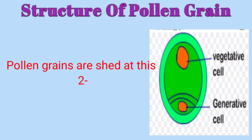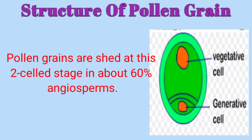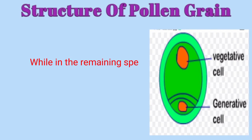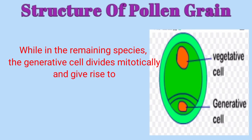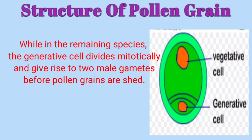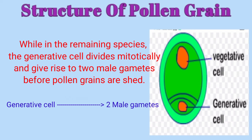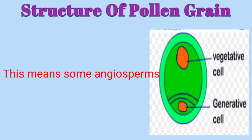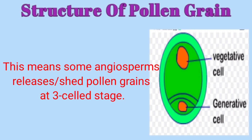Pollen grains are shed at this two-celled stage in about 60% of angiosperms — meaning in the majority of flowering plants the pollen grains are shed when they have the generative and vegetative cells. While in the remaining 40% of species, the generative cell divides mitotically and gives rise to two male gametes before the pollen grains are shed. This is called the three-celled stage, because we have one vegetative cell and two male gametes — one plus two equals three.